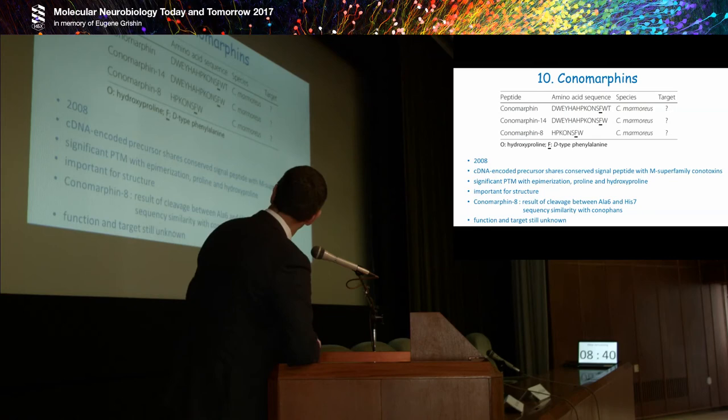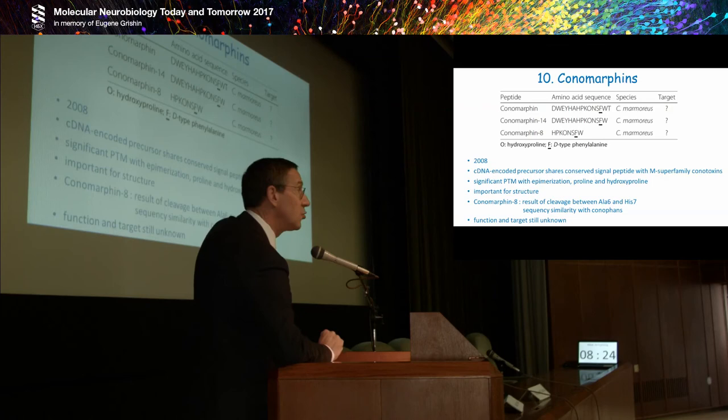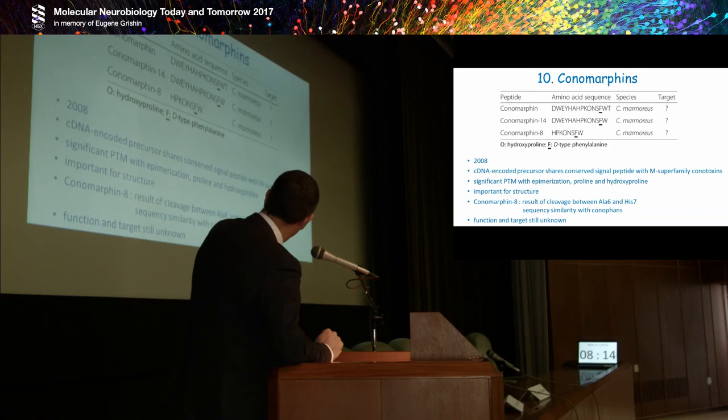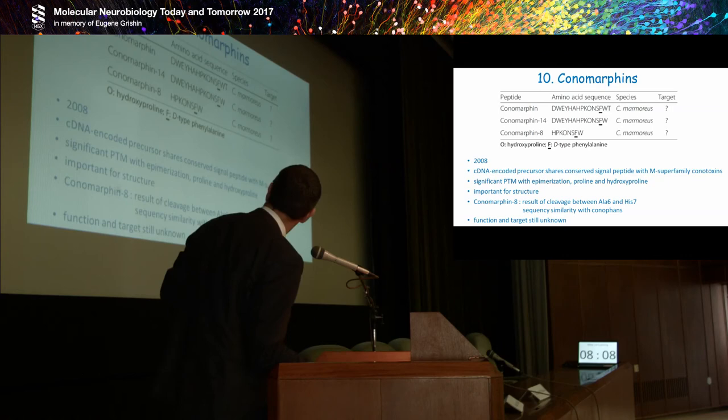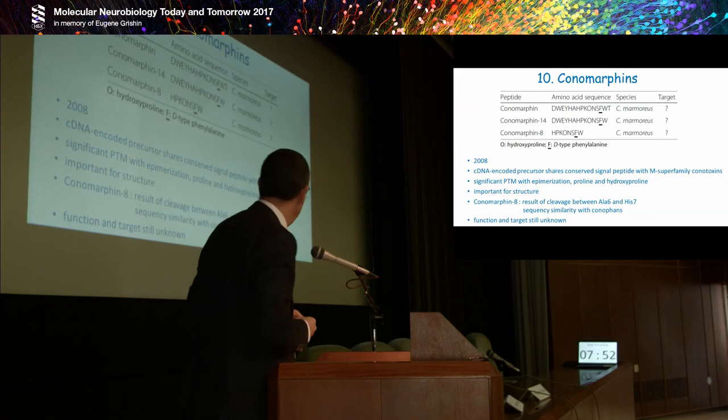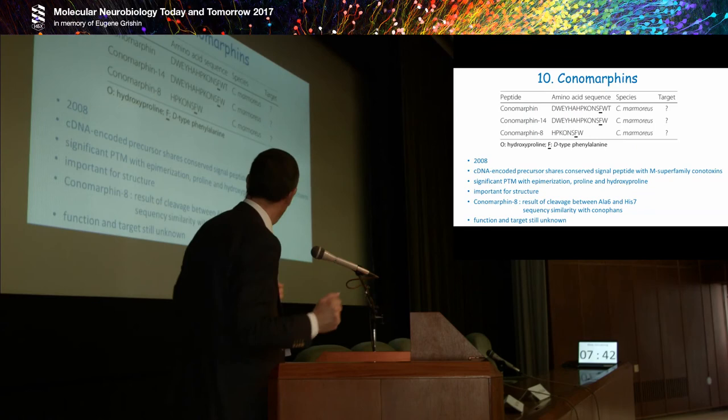Then the conomorphins, three representatives so far. 2008, it has begun. They have a cDNA-encoded precursor with a conserved signal peptide with the M superfamily of conotoxins. These are classical cysteine-rich type of conotoxins. So sometimes the prepropeptide is more identical or homologous than the final and mature peptide. There is significant PTM with epimerization at proline and hydroxyproline. This is important for structure. Interesting here, when we screened all the database and literature, is that when you look at conomorphin 8, it is the result of a cleavage between alanine at 6 and histidine at position 7. So here the cleavage, and then you have a new peptide. You can say this is by chance, but it isn't. According to the paper and the publishers, they really have consistently been able to show the simultaneous presence of conomorphin 8 with the 14. Why? We have no idea, because also the target and function is still unknown. This is a very simple structure.